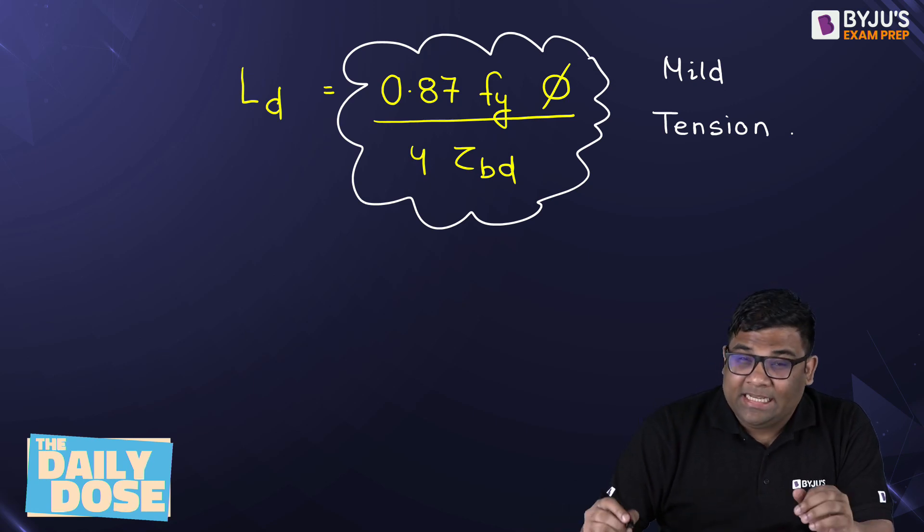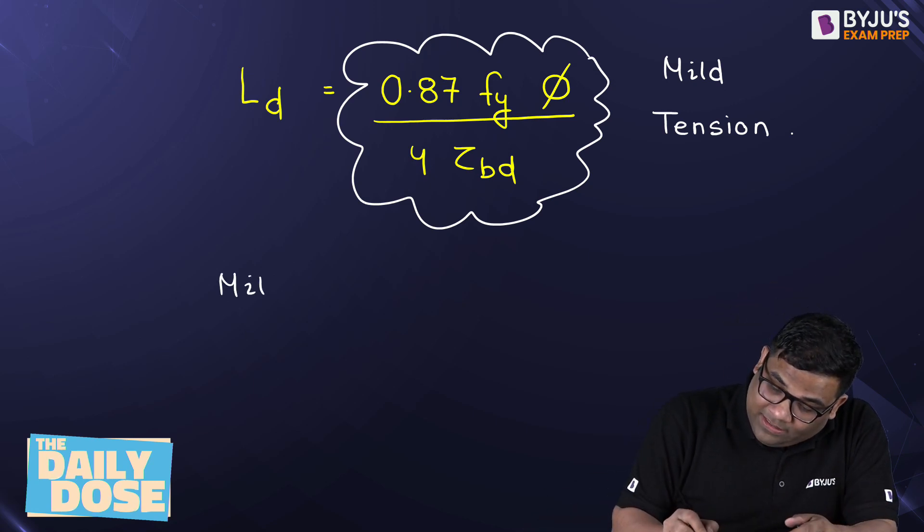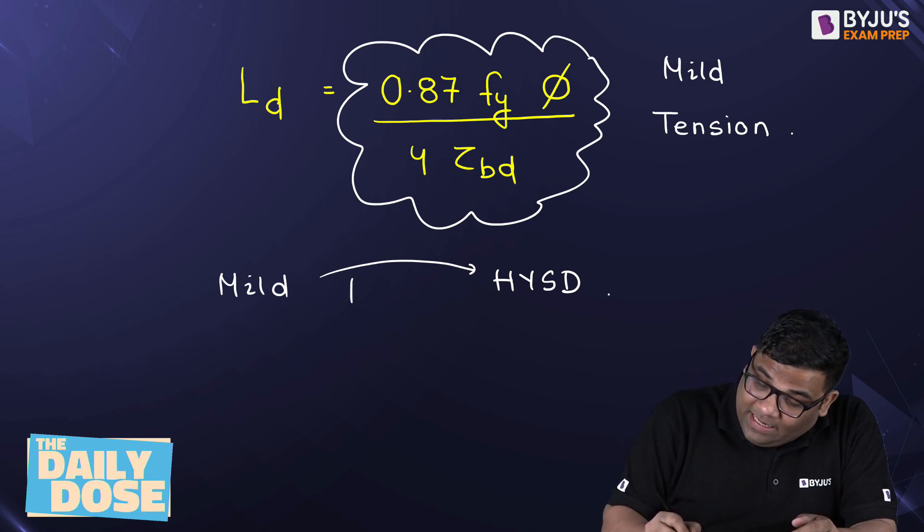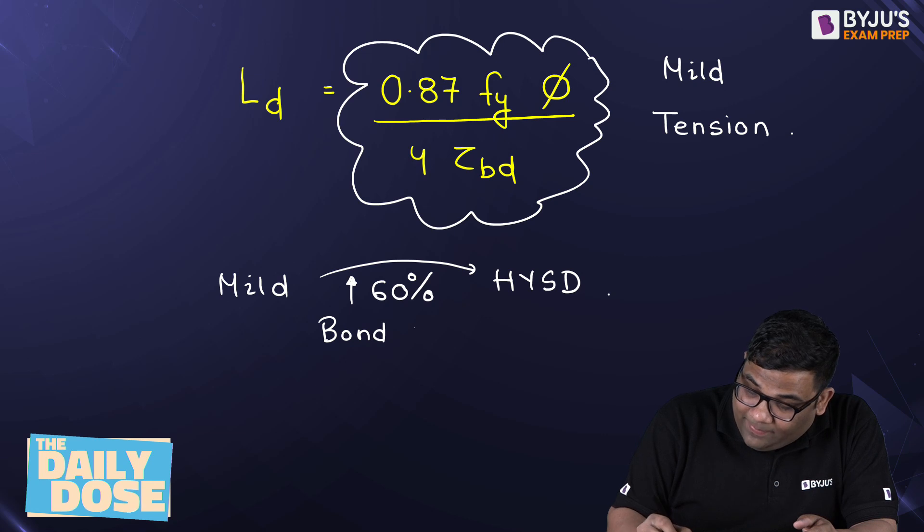Now, what are the changes? The changes are when the steel changes from mild to HYSD, that is high yield strength deformed bar. Then the tau Bd increases by how much? 60%. There is 60% increase in your bond stress tau Bd.